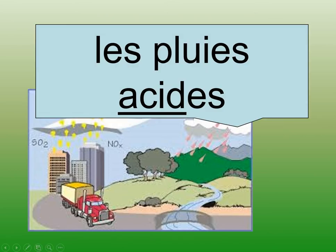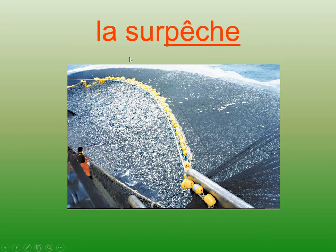Acid rain: we have our cognate here but it's not pronounced 'acid' but 'acide'. Any time we have 'ui' in French, like in the word 'oui', it is that 'wee' sound. So les pluies acides. Next we have 'pêche', which means fishing. And 'sur' means on or over. So la surpêche — overfishing — where we have fished too much in certain areas and affected life cycles. La surpêche.